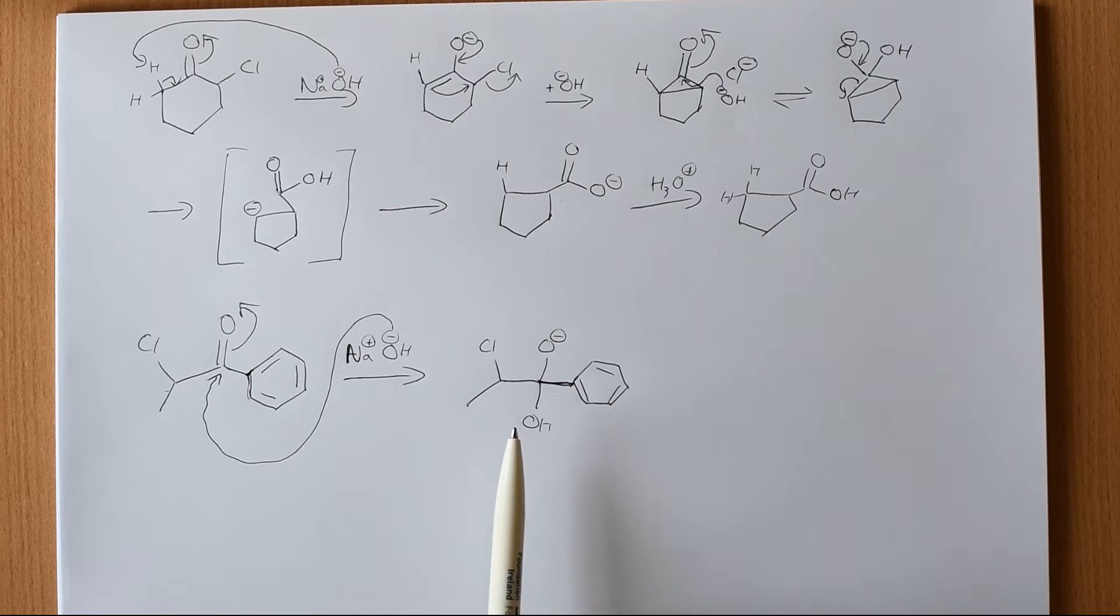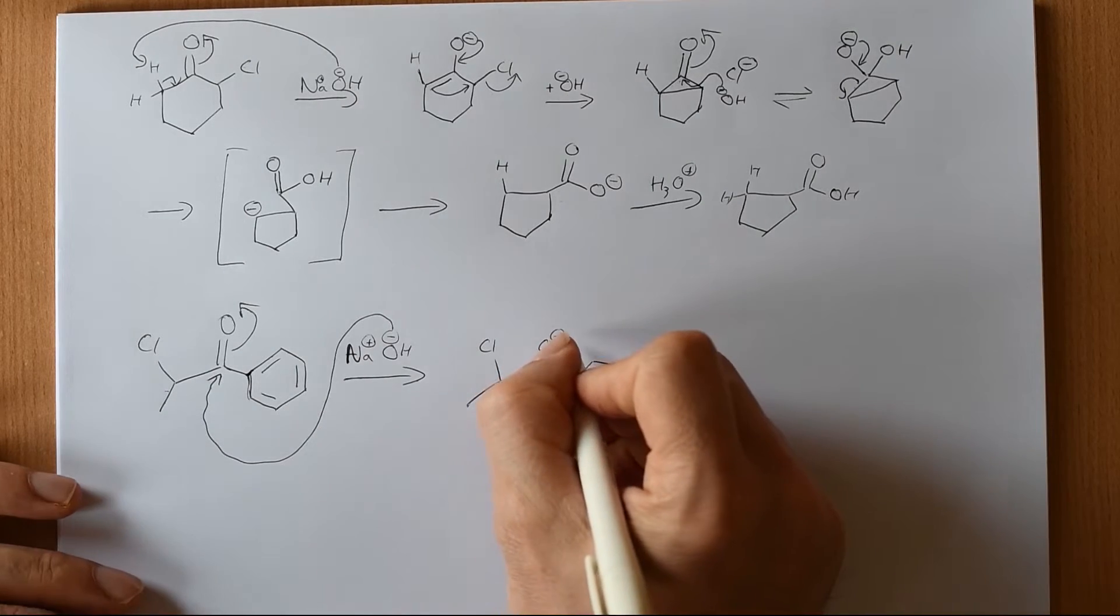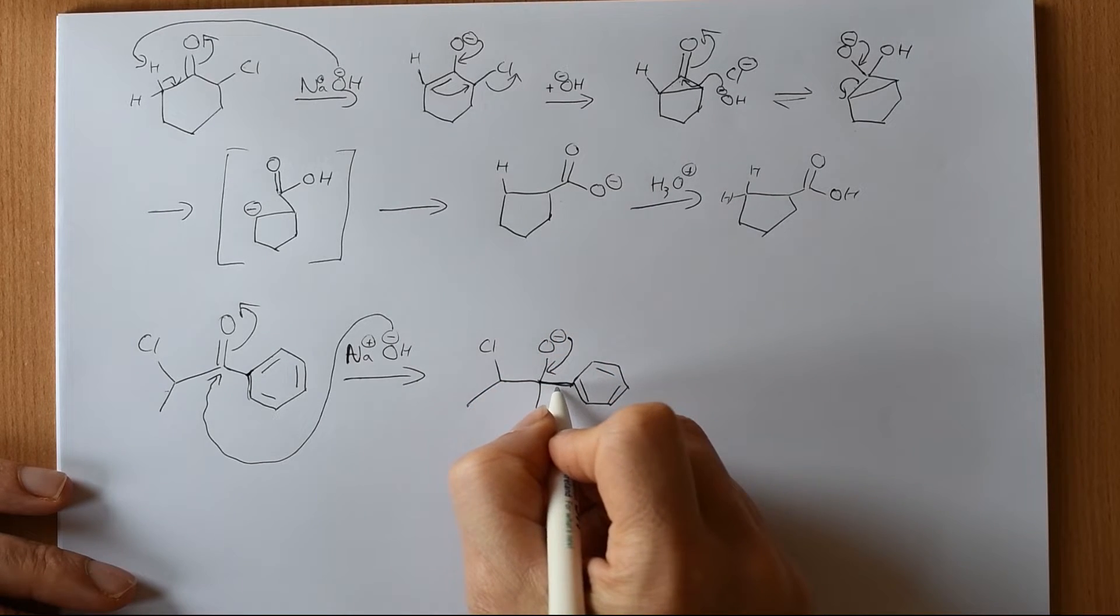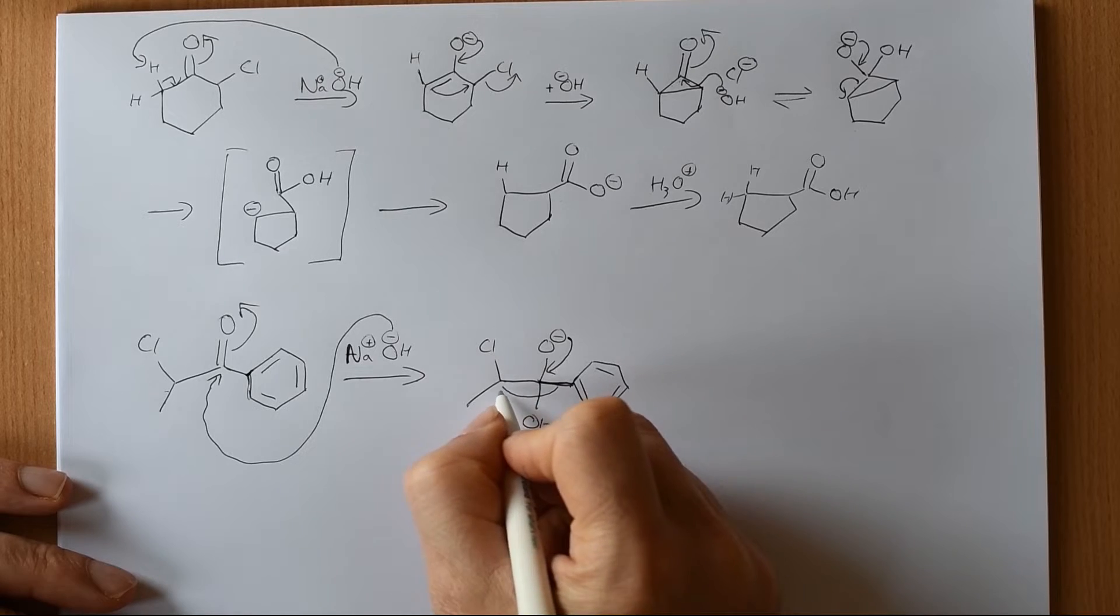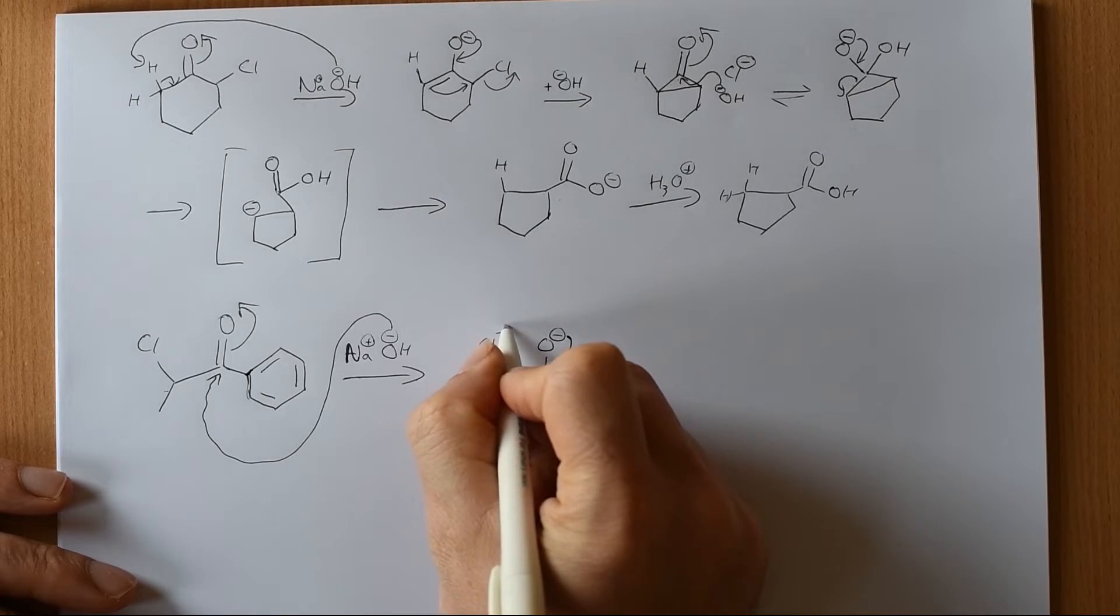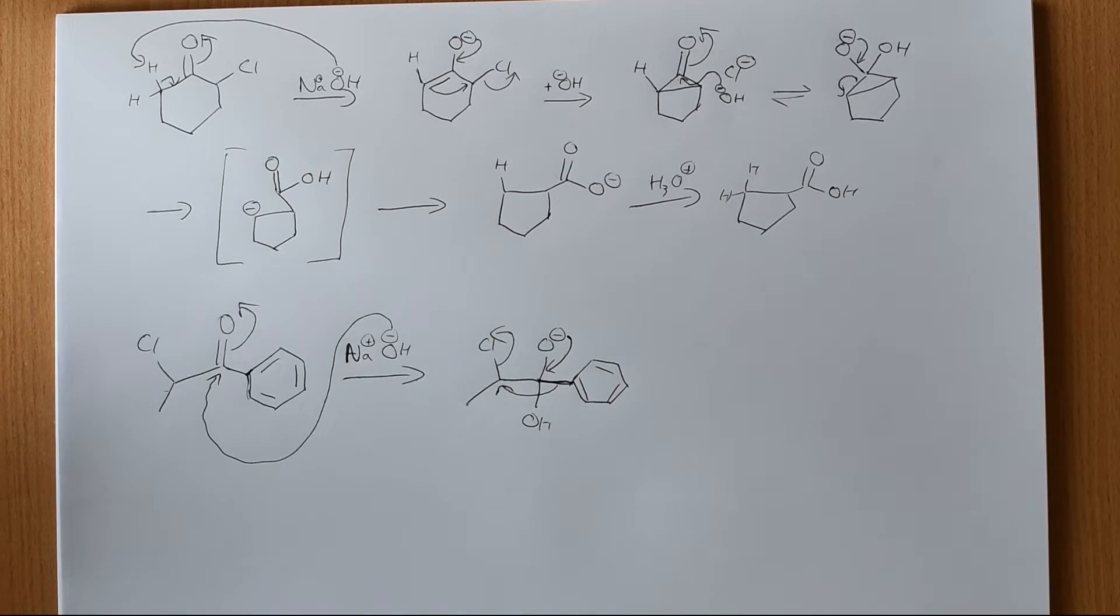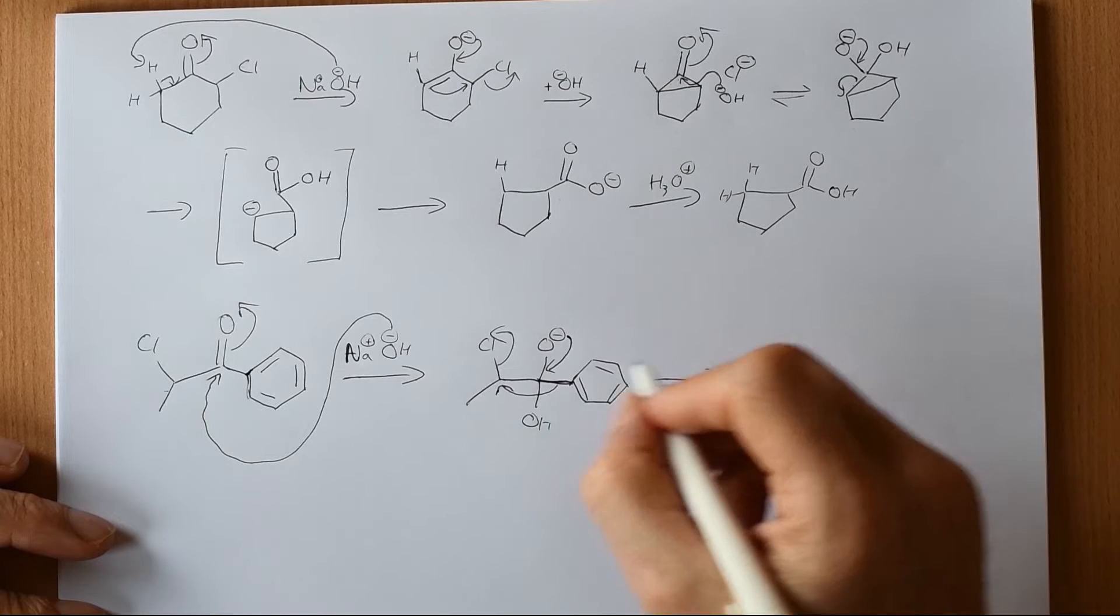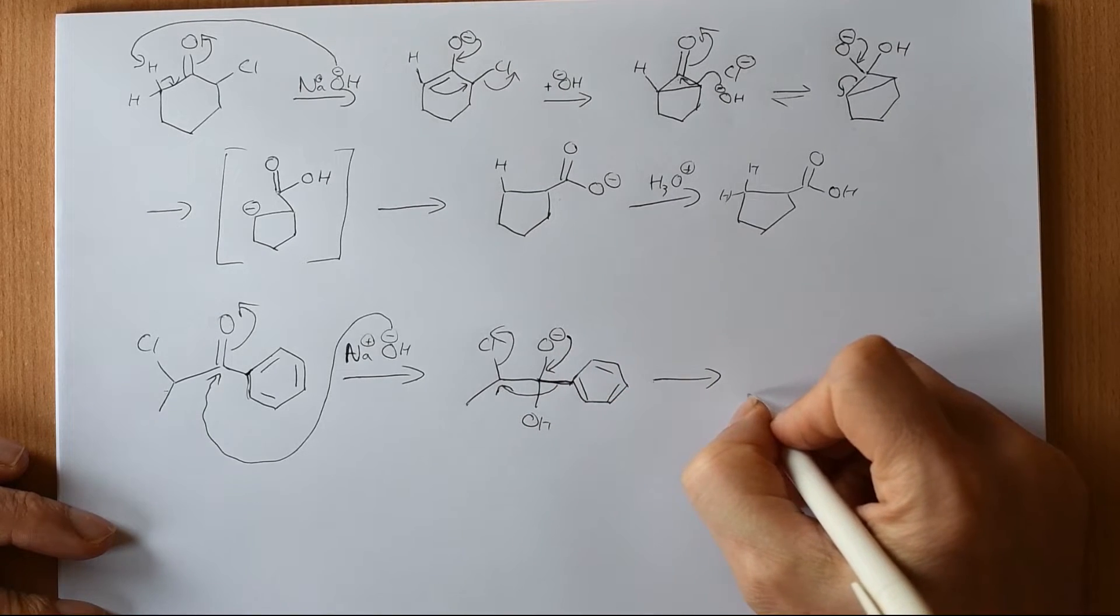So if you've seen the benzylic rearrangement, you'll know that something like this allows for migration. Well, exactly the same thing can happen here. We reform the carbon-oxygen double bond and this can migrate over as the chloride leaves. So in the benzylic rearrangement, this would be a ketone and you'd be forming an alcohol. In this case, the chlorine leaves and we have something quite similar to the benzylic rearrangement. So if we look at the product of this reaction.